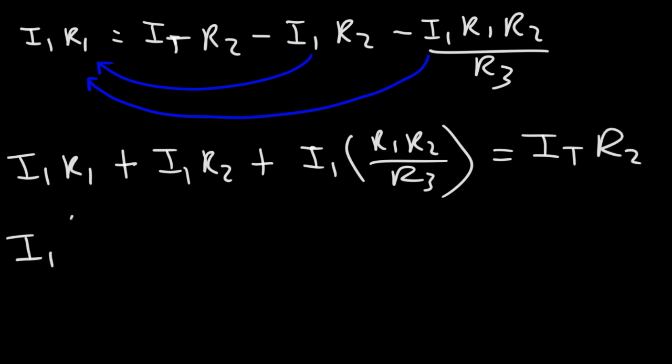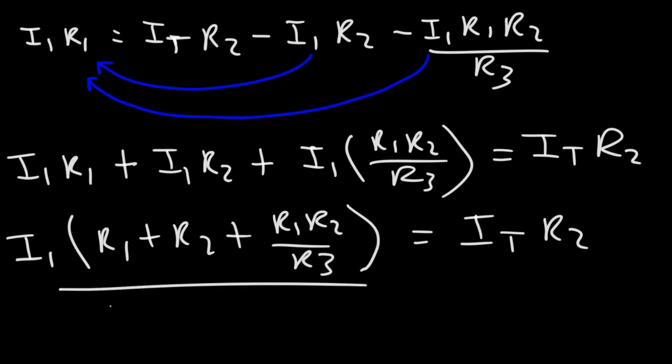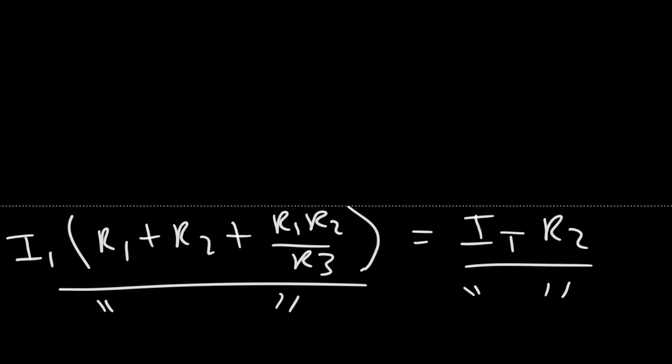Now, our next step is to factor out I1. So it's R1 plus R2 plus R1 R2 over R3 times the stuff on the right side. Next, we need to divide it by all of this. We want to divide both sides of the equation by R1 plus R2 plus R1 R2 over R3.